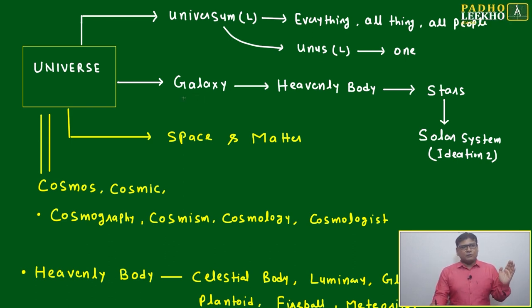We have come from the God: God to universe, after universe biggest bodies galaxy, then is coming heavenly body - that is the common definition - then it is coming the stars, then it is coming solar system. Solar system we will discuss in next iteration. This iteration will discuss about the galaxy, heavenly body, and the stars.